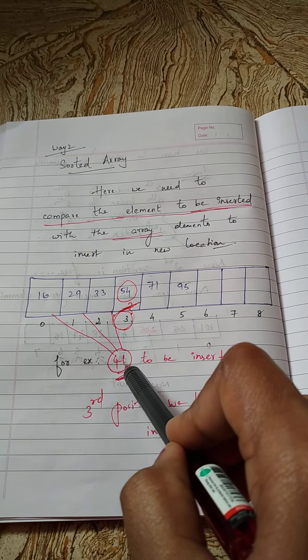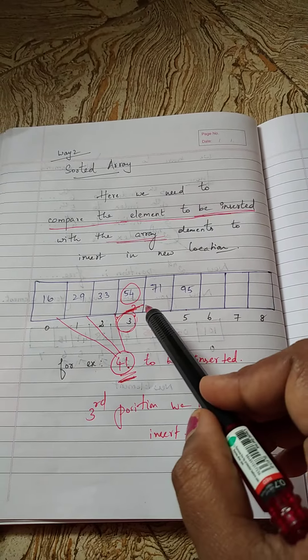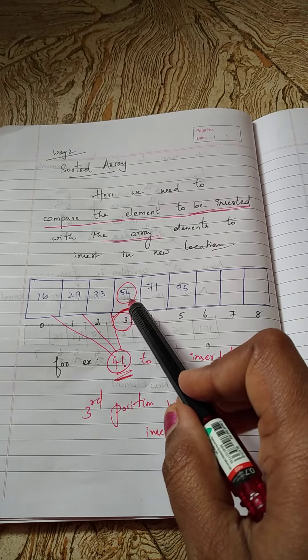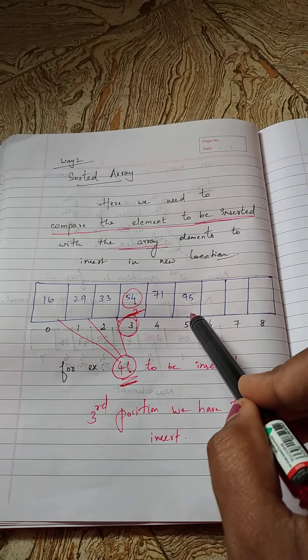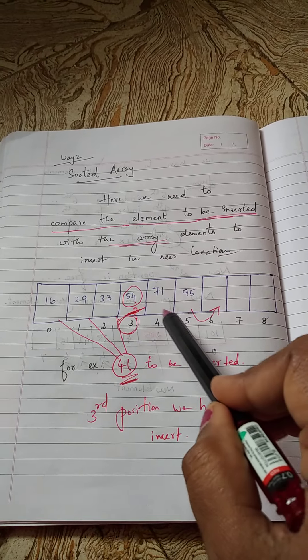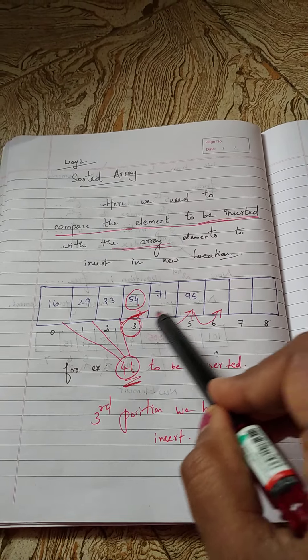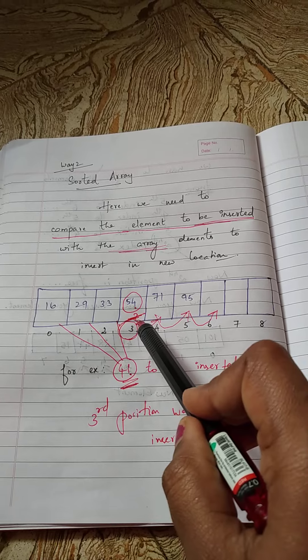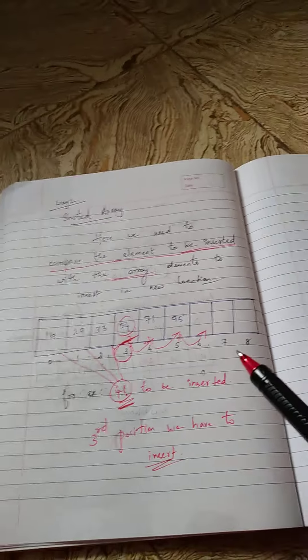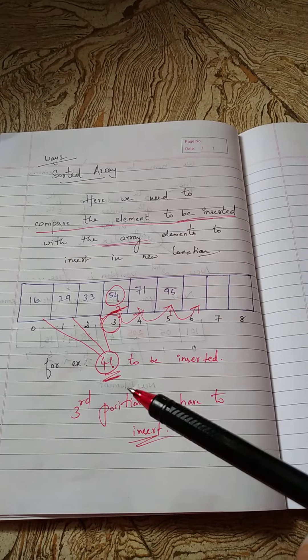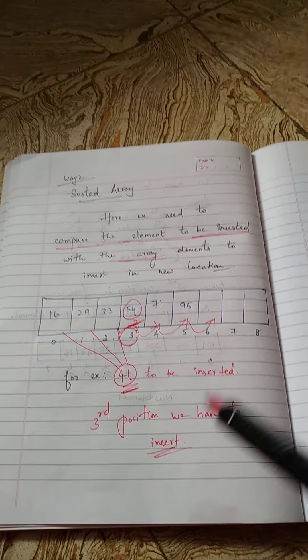So similarly, similar to the earlier case, what do you have to do? You have to empty this place. For emptying this place, you have to forward all the elements to one position. So see, 5 to 6, 4 to 5, 3 to 4. Now 3 is empty. Now you can insert an element in this array. So that is all for insertion.